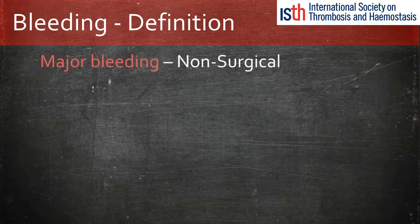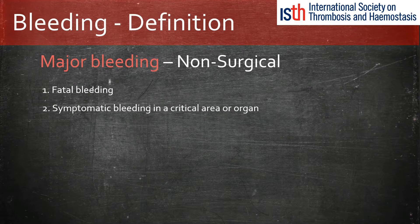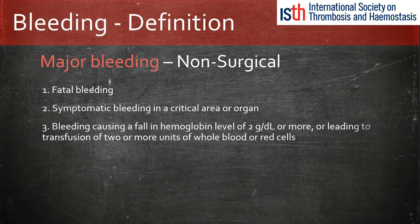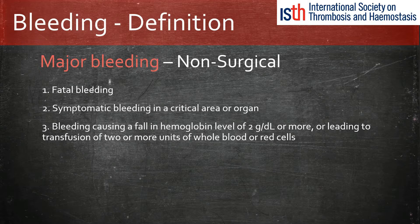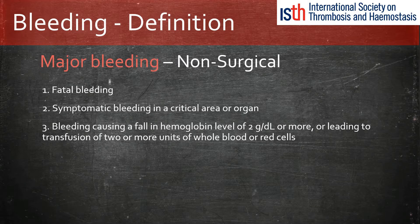Non-surgical bleeds are defined as those that prove fatal, are symptomatic, or cause a drop in hemoglobin of 2 grams or below. Obviously we do not wait for the bleeding to become fatal before categorizing the bleeds, but this is what the ISTH uses when conducting clinical studies.